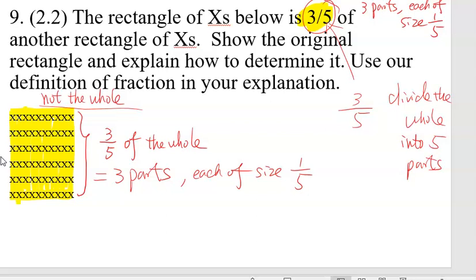We cannot take this and divide it into five equal parts. How many parts does the shape actually have? Three parts, because that's what the definition of three-fifths is. We don't have five parts. We can only divide it into three equal parts because that's what three-fifths means.